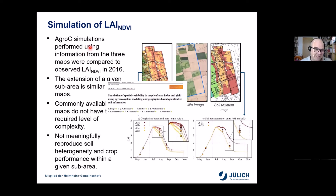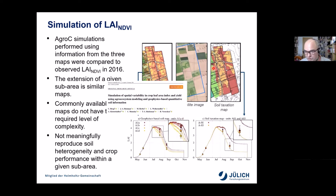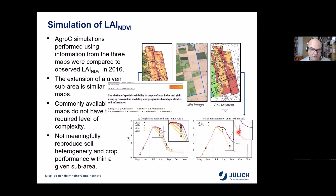Looking at a cutout of the area, we compared our geophysics-based map with the soil taxation map. When we average over the map units present in the soil taxation map, we see that we don't capture the patterns in crop productivity that are present in the geophysics-based soil map. So the spatial image obtained from standard maps is not as good.